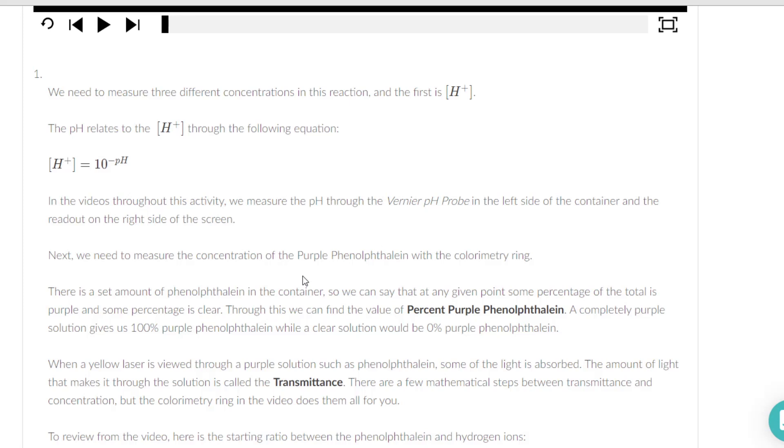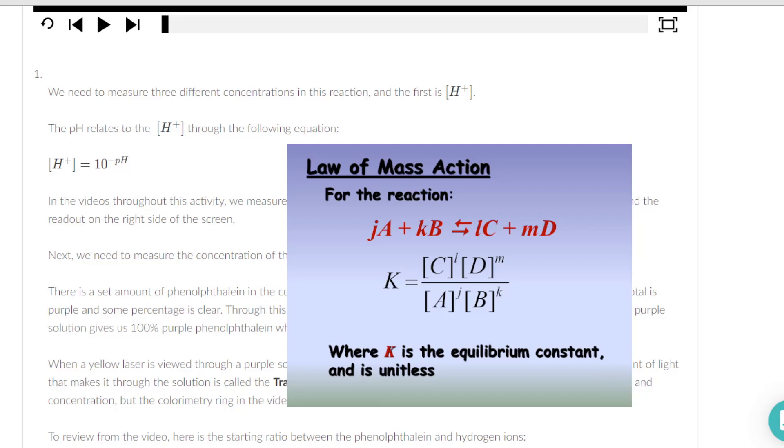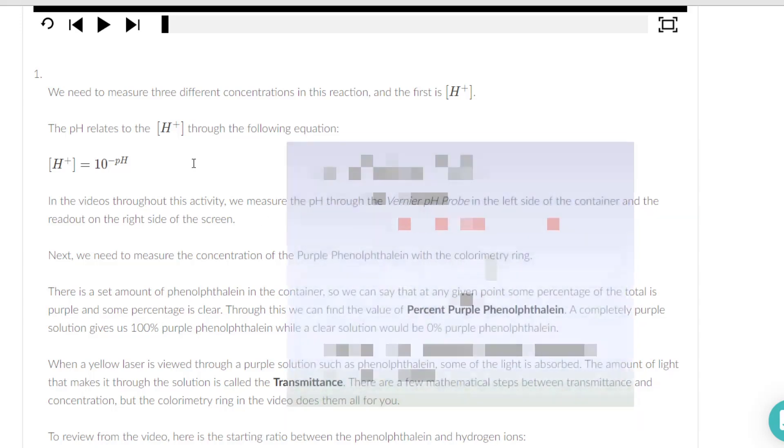What we're trying to get to is the law of mass action, the idea that it's the products over reactants. The pH is easy enough. We can actually find the concentration of the hydrogen ion by just doing an inverse log of the negative pH.